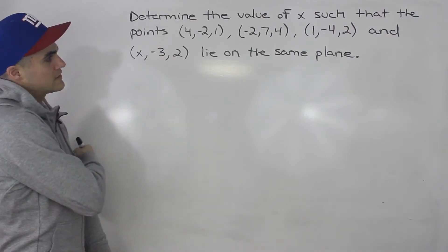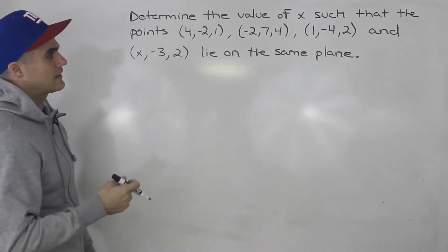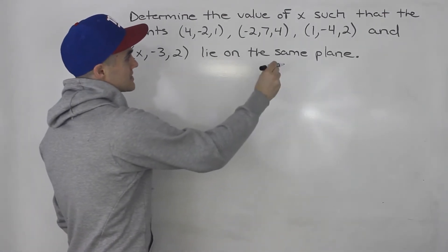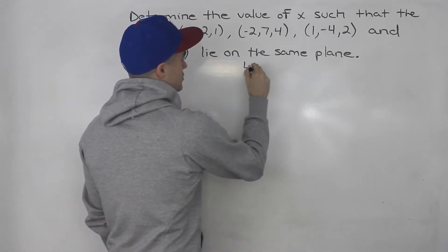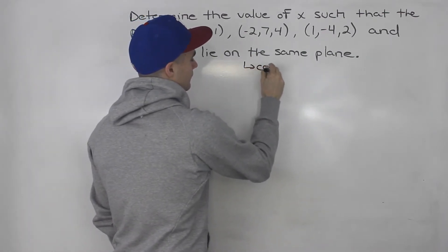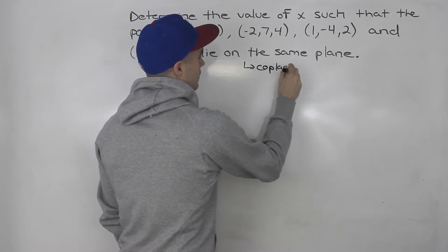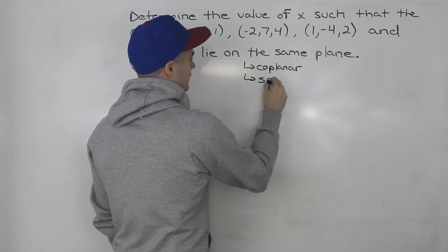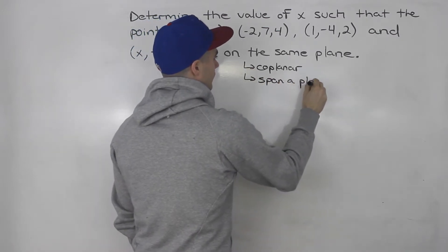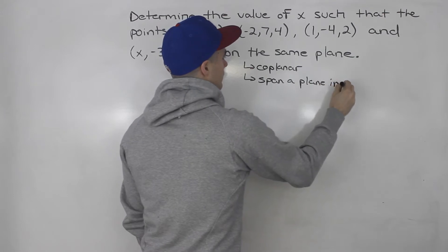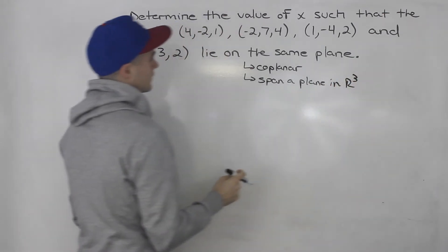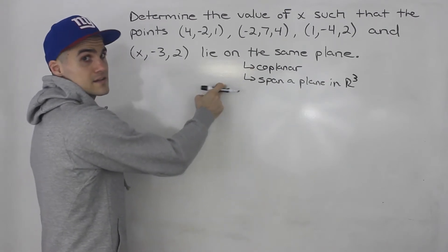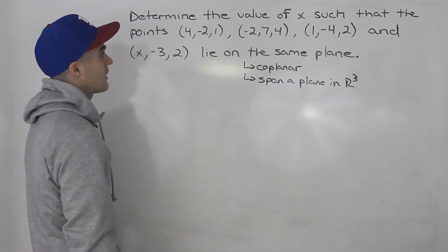We're given four points that lie on the same plane. This question could have been worded in different ways — instead of saying 'lie on the same plane,' they could have said these points are coplanar, or that these points span a plane in R3. So just be aware of that.